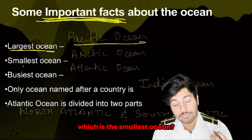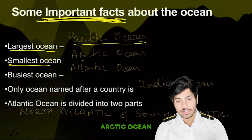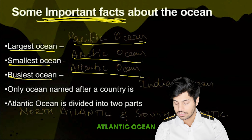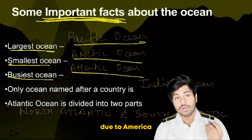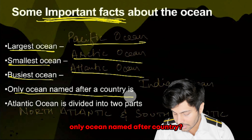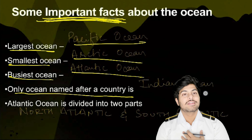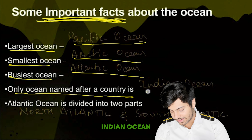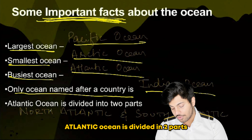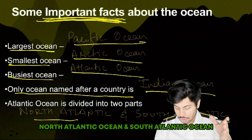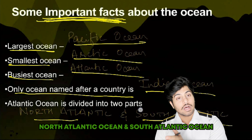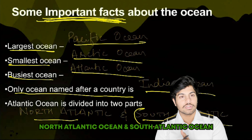Which is the smallest ocean? Arctic Ocean. Busiest ocean? Atlantic Ocean — due to America. The only ocean named after a country? Indian Ocean. Atlantic Ocean is divided into two parts: North Atlantic Ocean and South Atlantic Ocean.